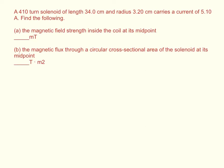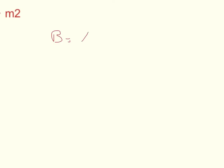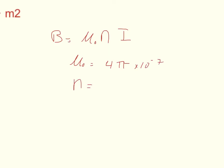We'll set up the equation for the magnetic field of a solenoid. It's equal to the permeability of free space times the turn density times the current. The permeability of free space is equal to 4 times pi times 10 to the negative 7th. The turn density is defined as the number of turns divided by the length, or the turns per unit of length.